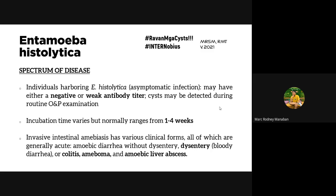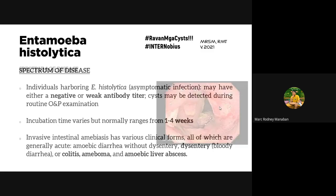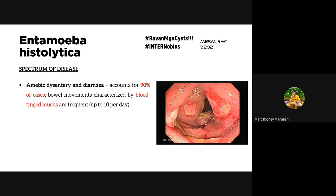Amoebic dysentery and diarrhea accounts for 90% of cases. Bowel movements are blood-tinged and mucoid, occurring up to 10 times per day. This can lead to fluid loss and electrolyte imbalance, making it important to replenish electrolytes. When examining stool samples, prioritize the liquid or diarrheal stools because they may contain trophozoites — especially if the stool contains blood or mucus.